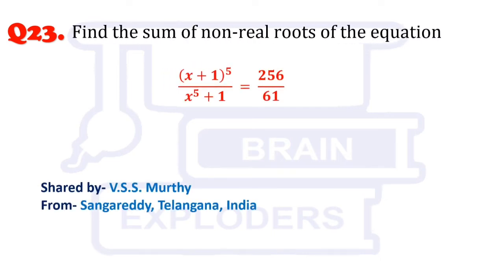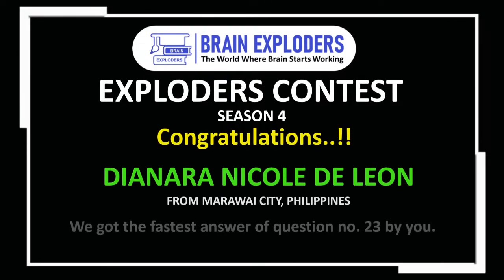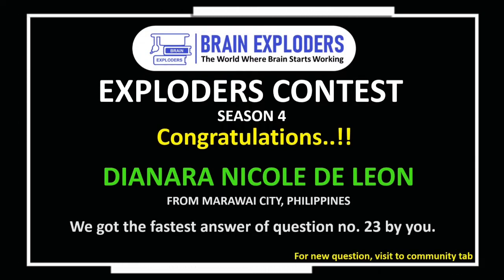Find the sum of non-real roots of the equation: (x + 1)^5 / (x^5 + 1) = 256/61. You are watching Brain Exploders, the world where brain starts working.